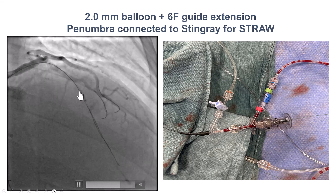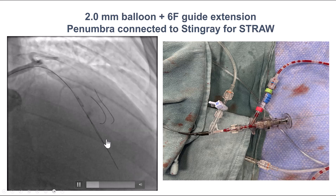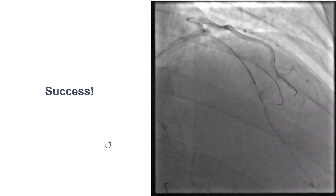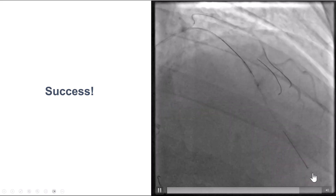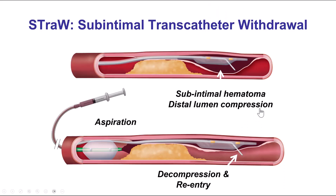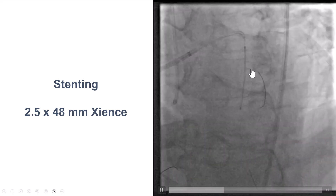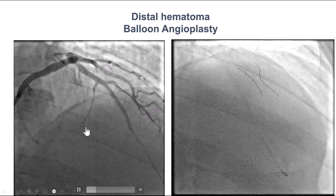We also had a proximal balloon blocking entrance of contrast down to the mid-LAD. After doing this aspiration, we tried re-entry again with the Stingray balloon, and we were able to successfully enter into the distal true lumen. As illustrated, we created the large hematoma accidentally with the mega-Carlino, then used the Penumbra pump with the proximal balloon to aspirate the hematoma, re-expand the distal lumen, and re-enter with the same Stingray balloon. We placed a stent, jailing the proximal diagonal at the proximal cap, which restored flow.